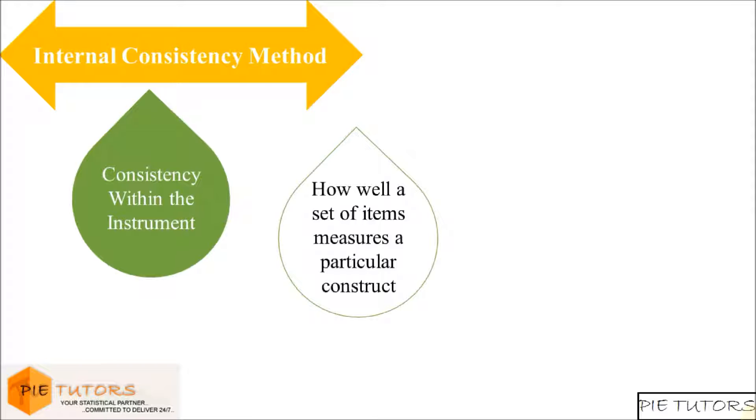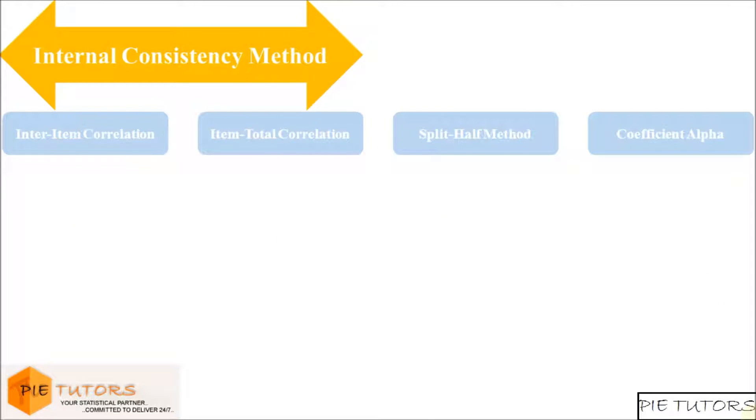This method of establishing reliability essentially relies upon how well the several items within the measure hang together. There are four ways to check the internal consistency of a measure.